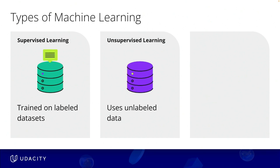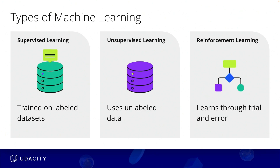Unsupervised learning, on the other hand, uses unlabeled data, enabling the model to identify patterns and relationships on its own. This includes clustering, which groups similar data points together, and anomaly detection, which identifies unusual data points. Reinforcement learning is a process where AI models learn through trial and error to make decisions that maximize a reward.